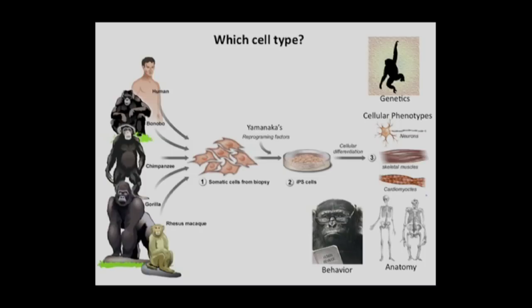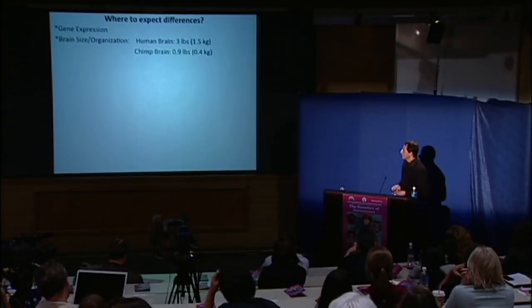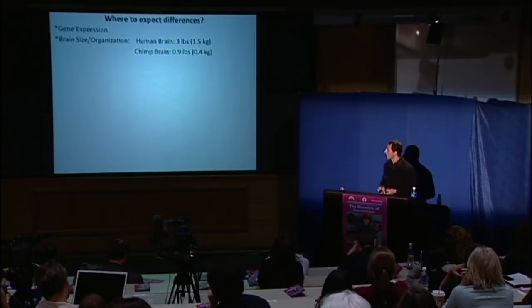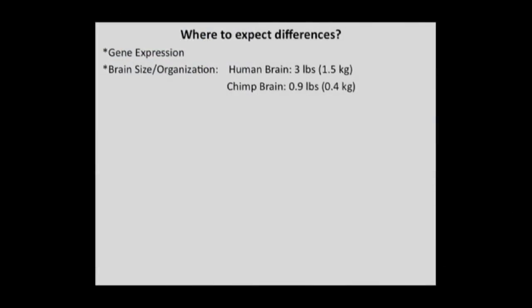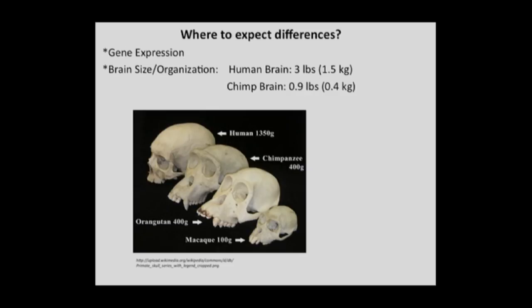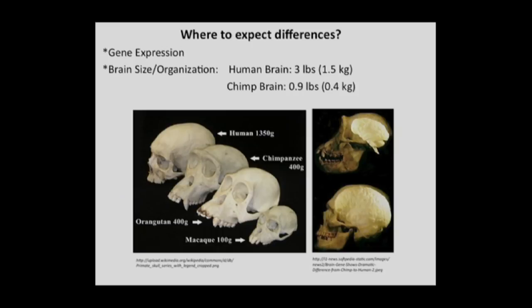Once convinced we can make pluripotent stem cells from different species, the question is what cell type to study. Because we are neuroscientists, we decided to focus on the brain. There are many reports that the human brain has different gene expression compared to other species, and a clear difference in brain size and organization — the cranial capacity of humans is far larger than other primates. This suggests we should see differences in brain size, organization, and gene expression.